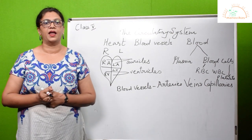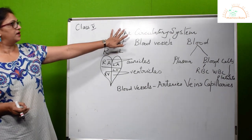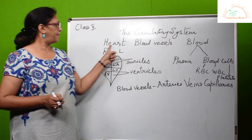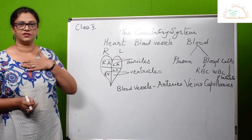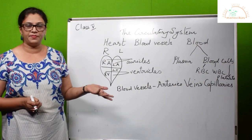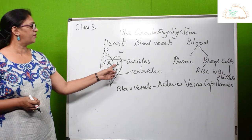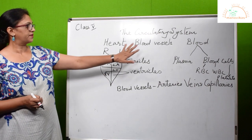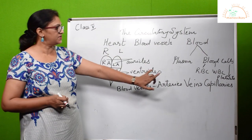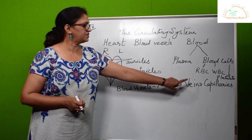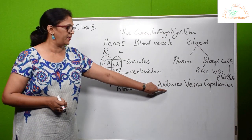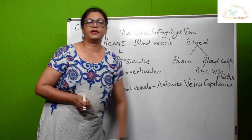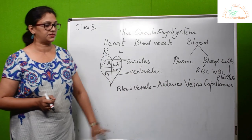Blood also helps in clotting. So once again, the three parts of the circulatory system are the heart, the blood vessels, and blood. The heart is located in the chest on the left side, protected by the ribcage, and consists of four chambers — two auricles and two ventricles. The blood vessels are of three types: arteries, veins, and capillaries. Arteries carry pure blood and are thick-walled; veins carry impure blood; capillaries form the connections between arteries and veins.